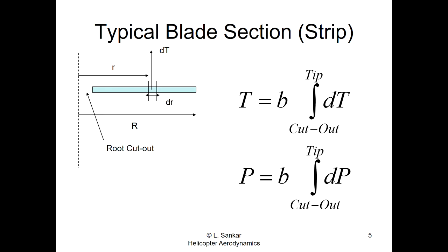You divide the blade into small segments of width dr. Each dr produces a small amount of thrust dT and consumes a small amount of power dP. Integrating dT and dP — analytically or numerically — from the root cutout all the way to the tip gives the contribution for one blade. Multiply by the number of blades B to get the total thrust and total power.